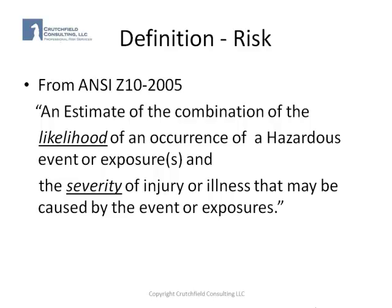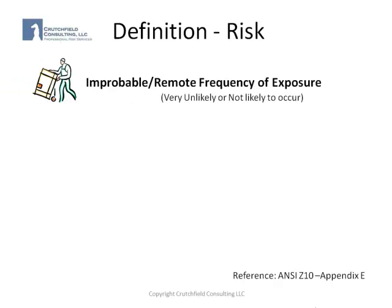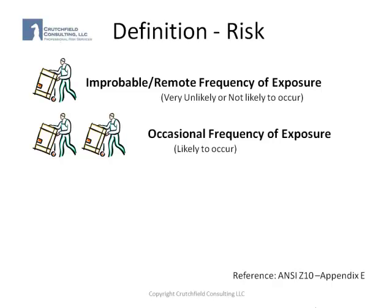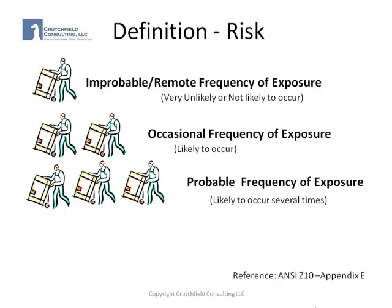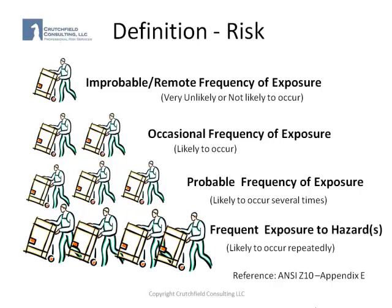So how do we go about looking at this? First, we might have an exposure that is improbable or remote — very unlikely or not likely to occur. It could be an exposure that is occasional, meaning it's likely to occur at some point in time. It has probable frequency of exposure, which would be likely to occur several times, or it could be a frequent exposure — likely to occur repeatedly. Please refer to ANSI Z10 Appendix E for further readings on the definition of exposures.